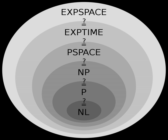The containments in the third line are both known to be strict. The first follows from direct diagonalization, the Space Hierarchy Theorem, and the fact that PSPACE equals NPSPACE via Savitch's theorem. The second follows simply from the Space Hierarchy Theorem.